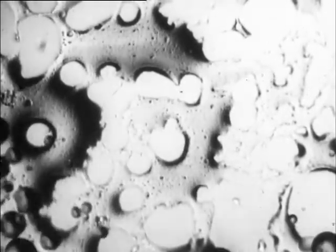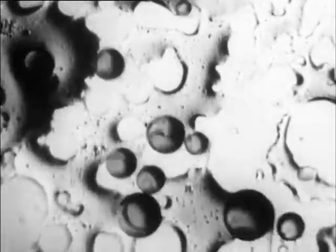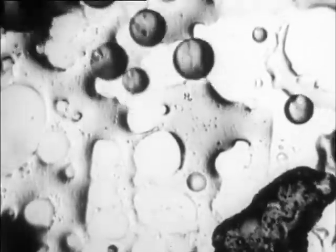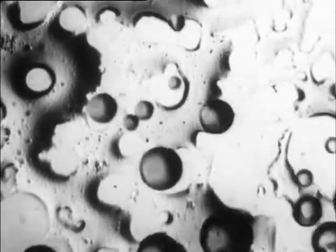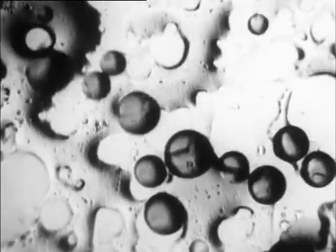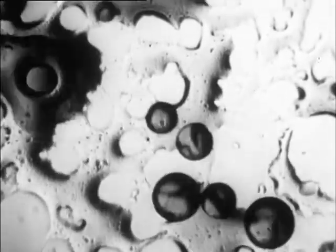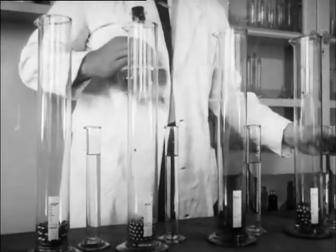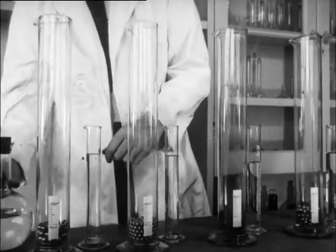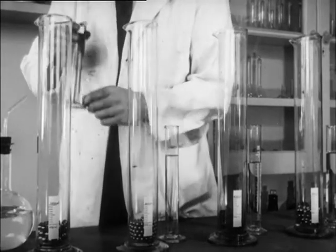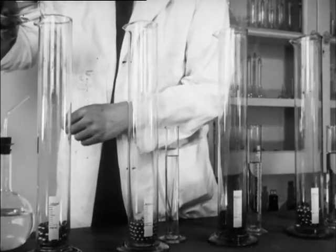The amount of one liquid that may be dispersed in another can be very high. It can be shown mathematically that if the dispersed globules are spherical and of the same size, the maximum possible amount of dispersion is 74 percent of the total, whatever the size of the globule.